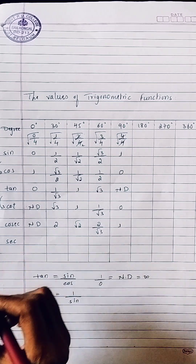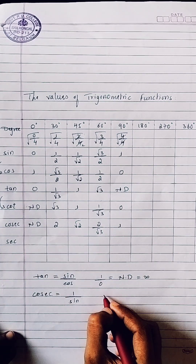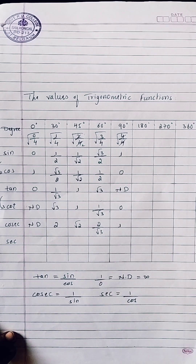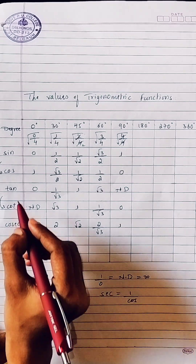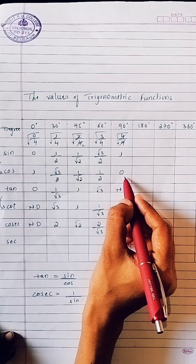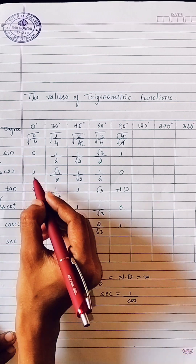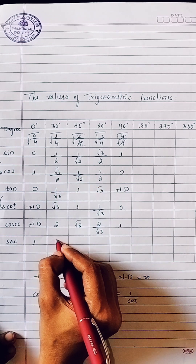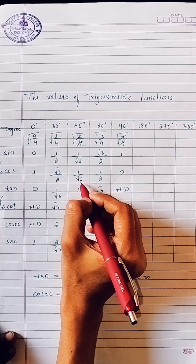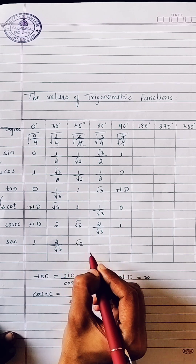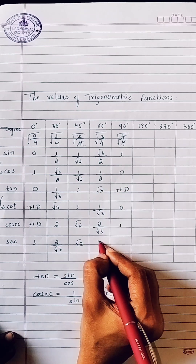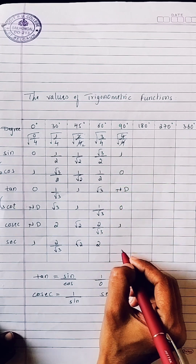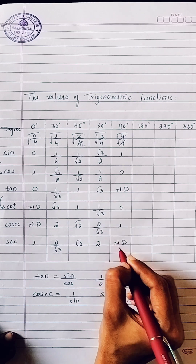The last one is sec. Sec has the identity that sec is the reciprocal of cos — one divided by cos. We have the cos values from 0 to 90 degrees. Reciprocal of 1 is 1. Reciprocal of √3/2 is 2/√3. Reciprocal of 1/√2 is √2. Reciprocal of 1/2 is 2. And cos 90° is 0, so 1 by 0 is not defined. So sec values are: 1, 2/√3, √2, 2, and not defined.